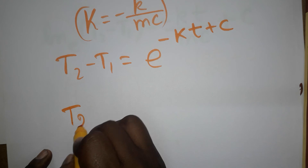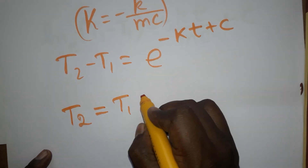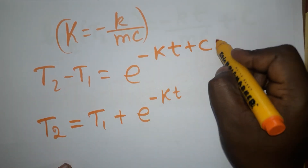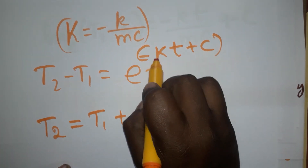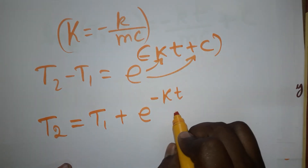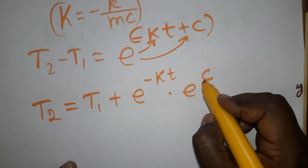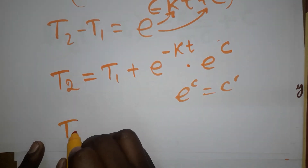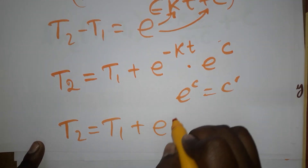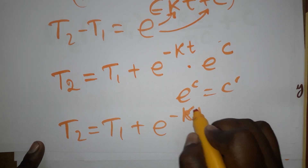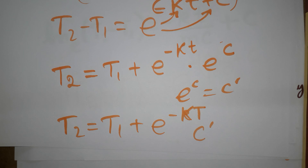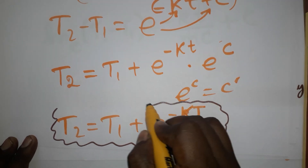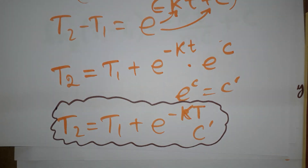Bringing T1 to the right side: T2 equals T1 plus e to the power of (minus K·t plus C). Since e to the power of C is a constant, we write it as C dash. The final equation is: T2 equals T1 plus C dash times e to the power of minus K·t. This is the final equation of Newton's Law of Cooling. If you like my channel, please subscribe. Thank you for watching.